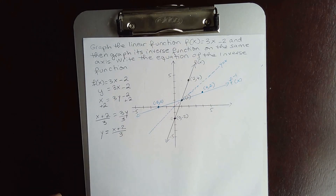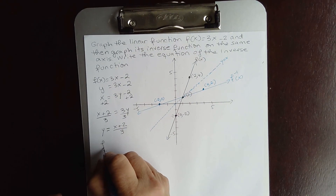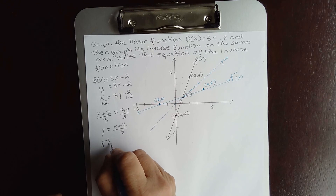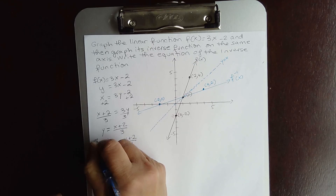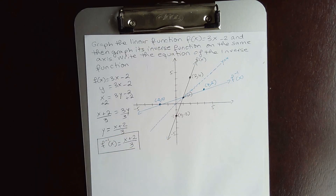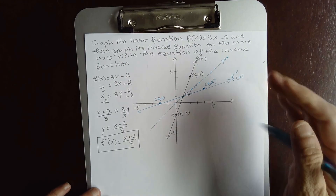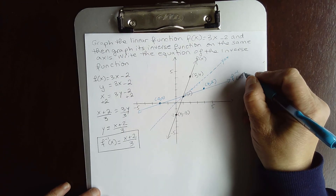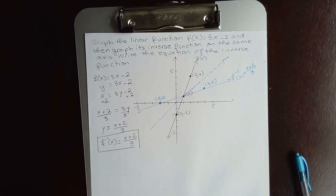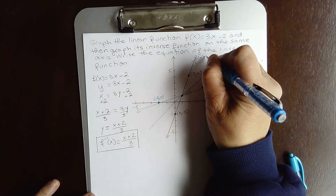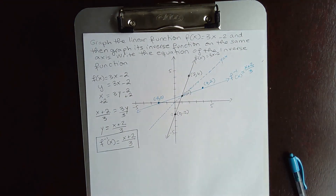Divide both sides by 3. Writing y on the left side, we get y equals (x plus 2) over 3. So the equation of the inverse function is f inverse of x = (x + 2) / 3. The original function was 3x minus 2 and its inverse is (x plus 2) over 3.